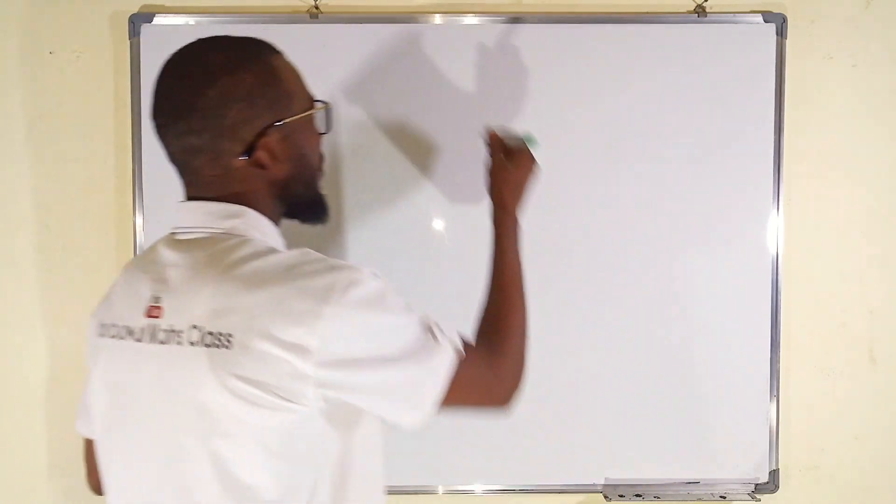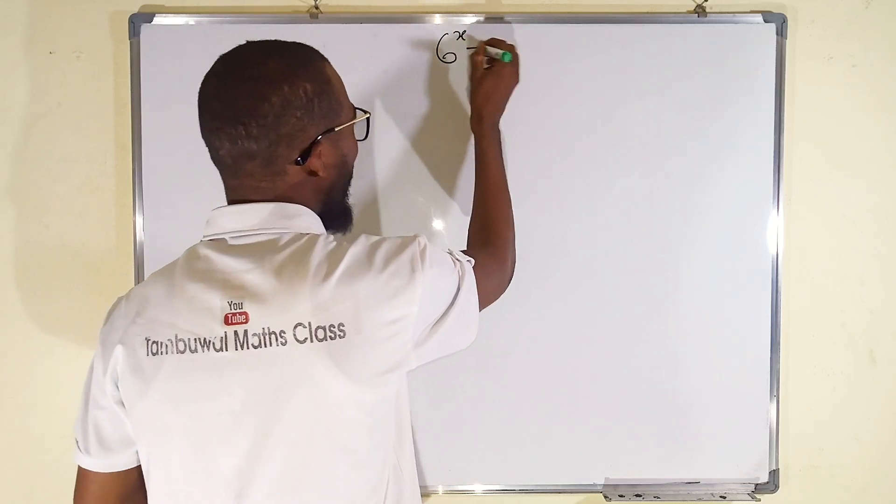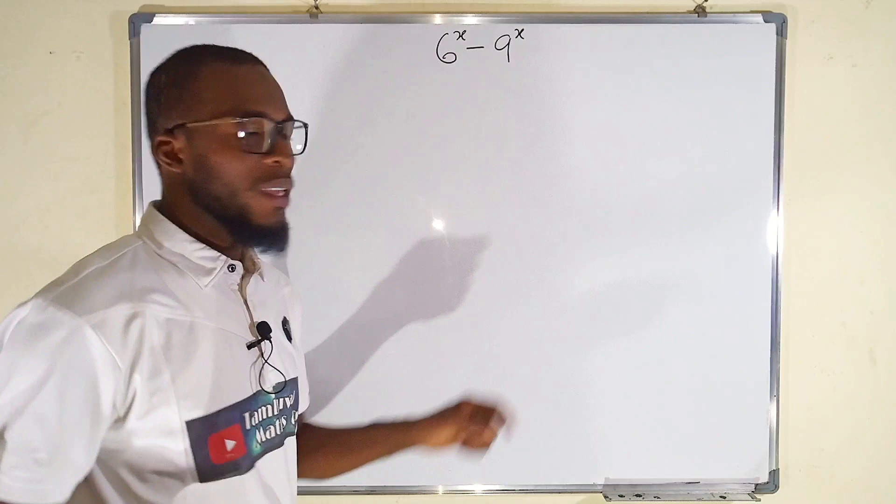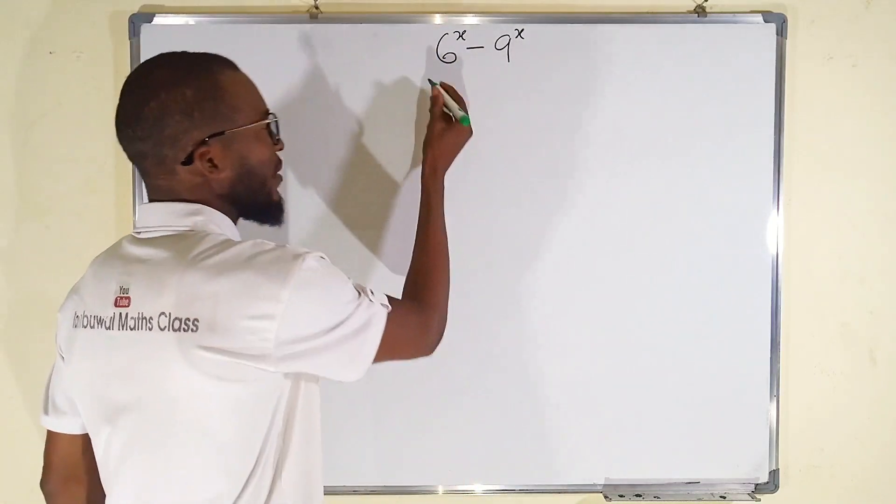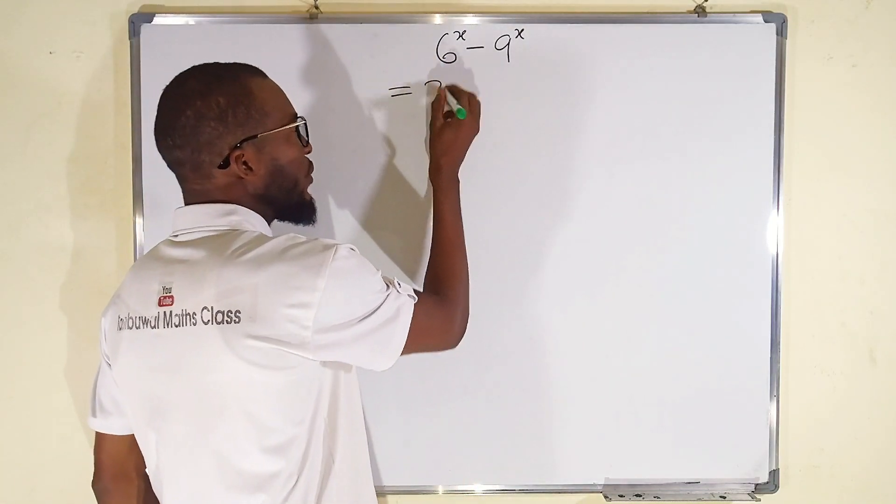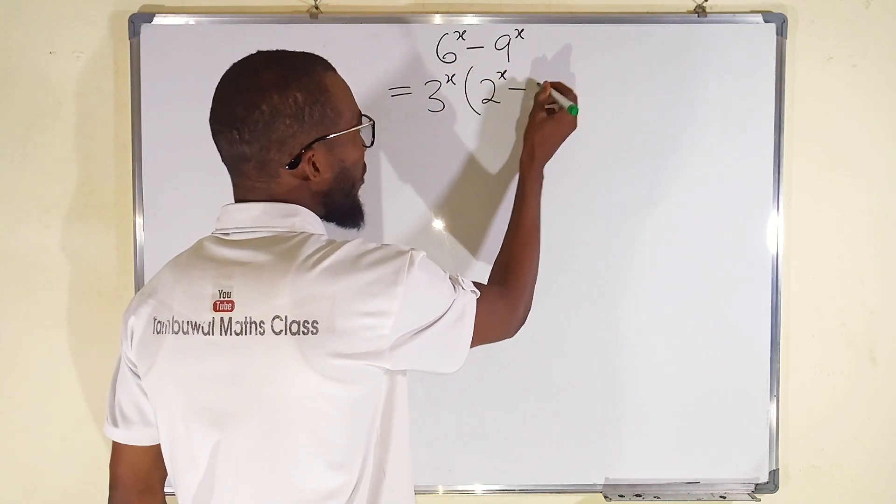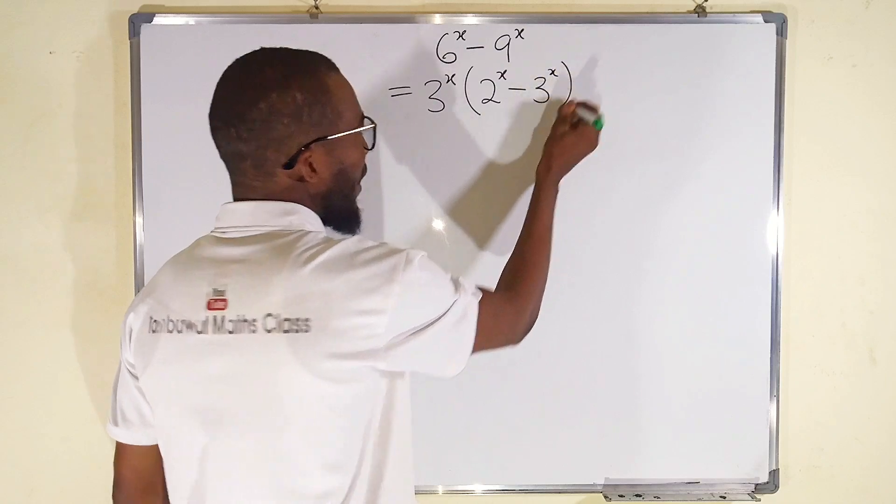Let me see if I can remember: 6^x - 9^x. Yes, this is what I factorized. I factorized this as 3^x multiplied by 2^x minus 3^x.